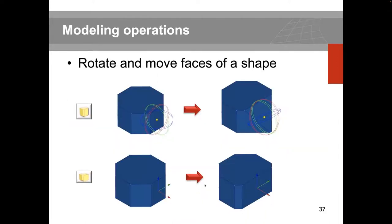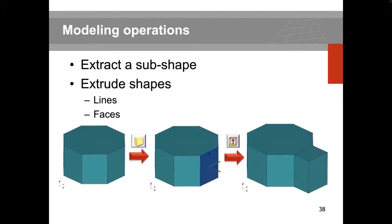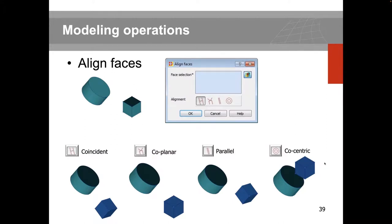Other modeling operations let you rotate or move a face to adjust your shape, via the action dialog box or dynamically with the mouse — by rotating around colored circles representing different axes, or pulling arrows representing the X, Y, and Z directions. You can also select and extract faces or edges, then extrude them to modify your geometry. The align face function lets you match different model parts relative to each other.